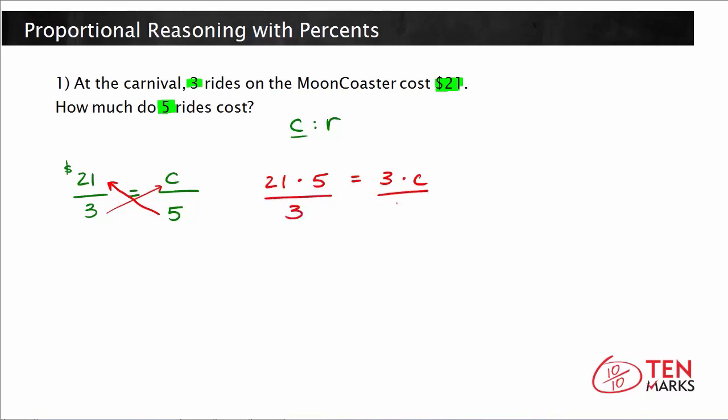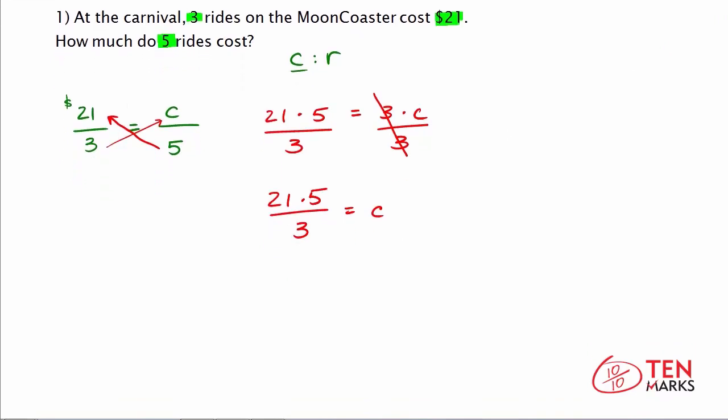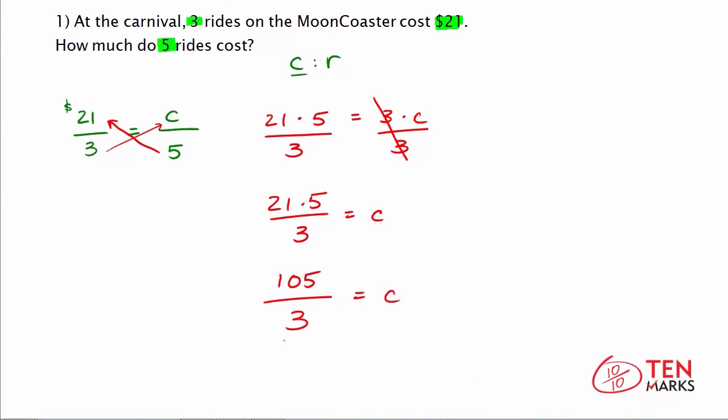Dividing by three on the right cancels the threes out, and you're left with C. So, you have 21 times 5 divided by 3 equals C. You have 21 times 5 over 3, which ends up being 105 divided by 3, and this is set equal to C. 105 divided by 3 is $35. The cost is $35.